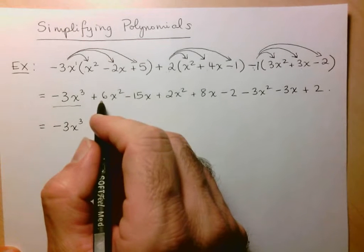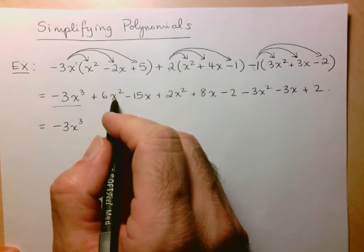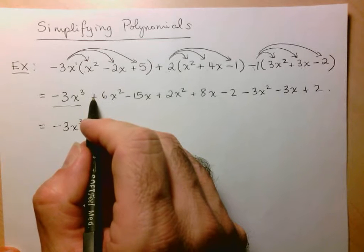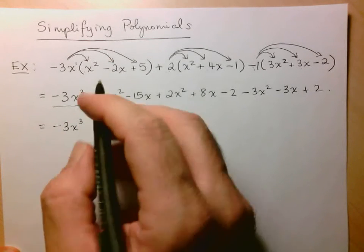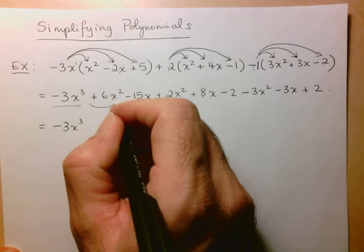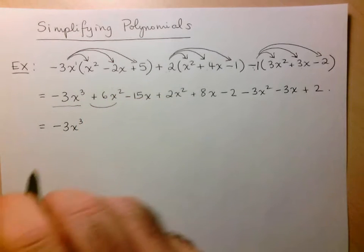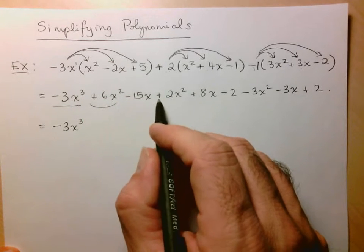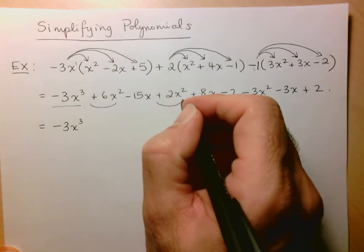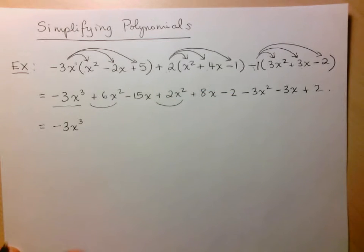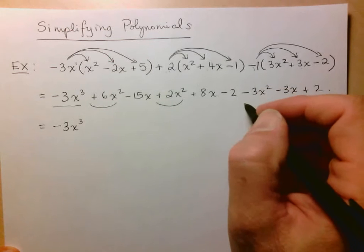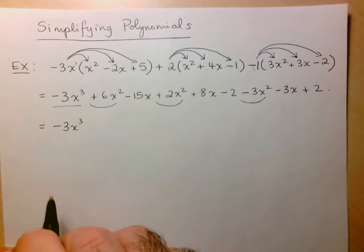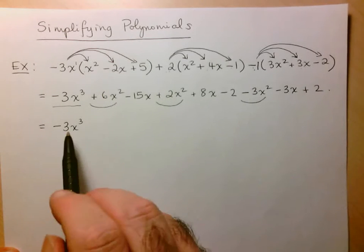Let's go now to the next, 6x squared. Now remember what I said. When you're considering the sign, you always look at the sign that comes before the number. So I'm actually going to consider this, it's positive 6x squared. And now let's look for any other x squared terms. Here we've got a plus 2x squared. So you see that I'm always including the sign that comes before it. And then it looks like here I've got a minus 3x squared.